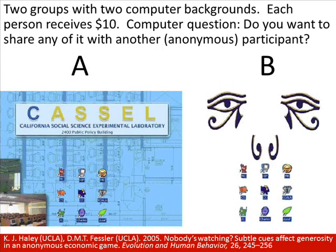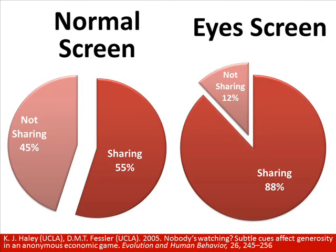In a clever study, office beverages were available with payment on an honor system. The picture above the payment instructions rotated weekly between an image of flowers — a neutral image — or an image of eyes watching the person. Payments were higher when pictures of eyes were posted, suggesting that even the subconscious appearance of being monitored actually changes behavior. In another study, two groups had different computer backgrounds; each person received $10 and was asked if they wanted to share any with an anonymous participant. Having the image of eyes led to a dramatic increase in sharing — a different form of pro-social behavior.